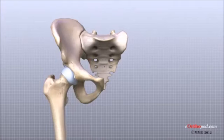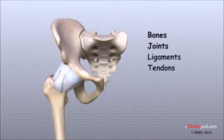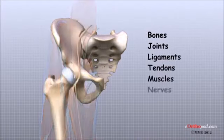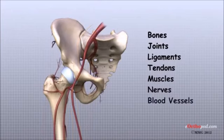The important structures of the hip can be divided into several categories. These include bones and joints, ligaments and tendons, muscles, nerves, blood vessels, and bursa.